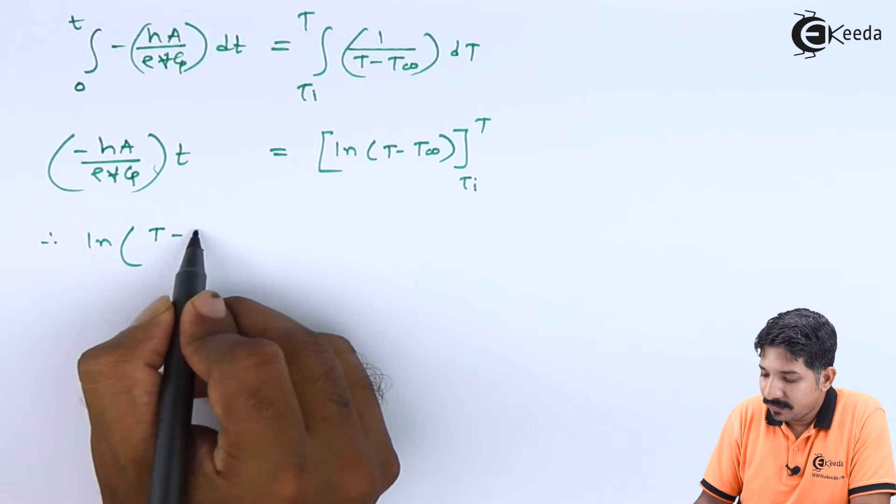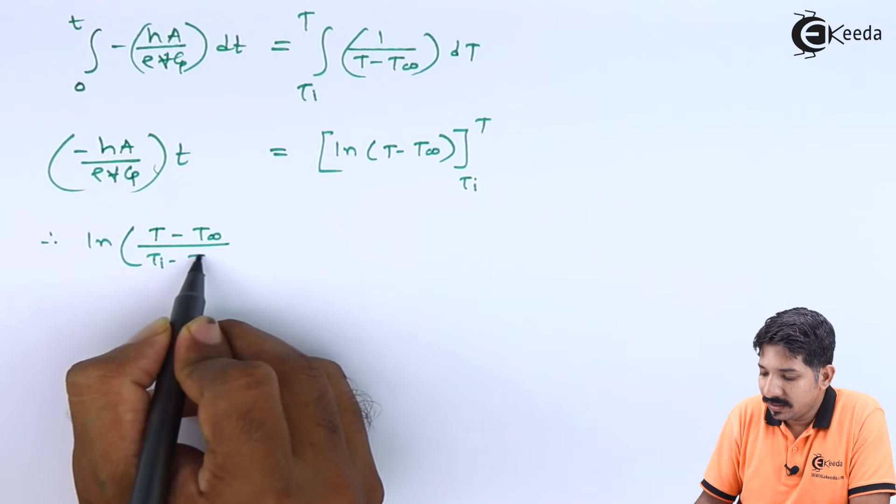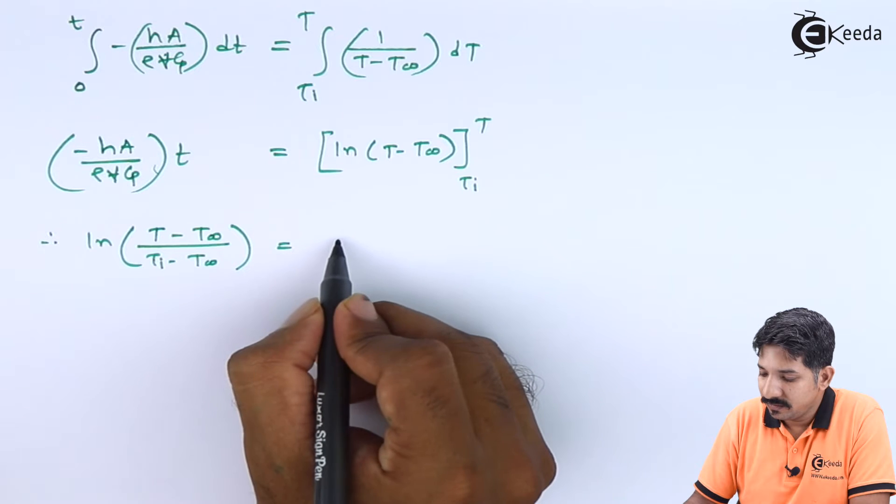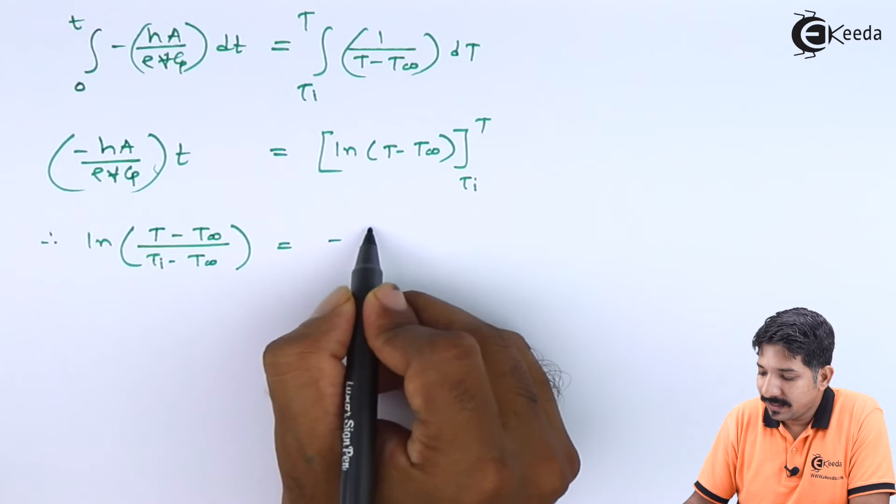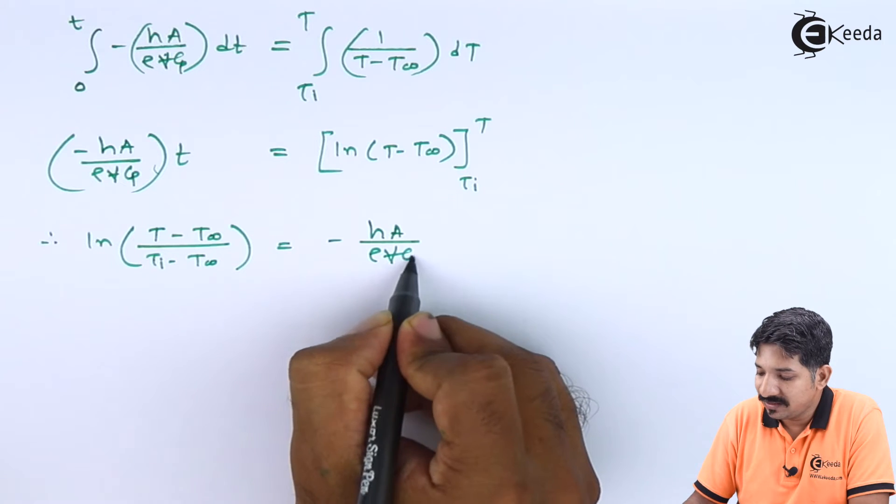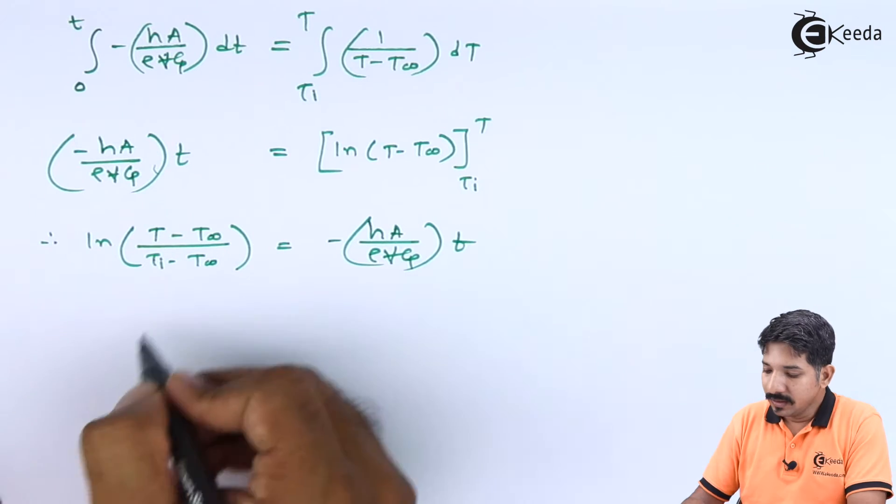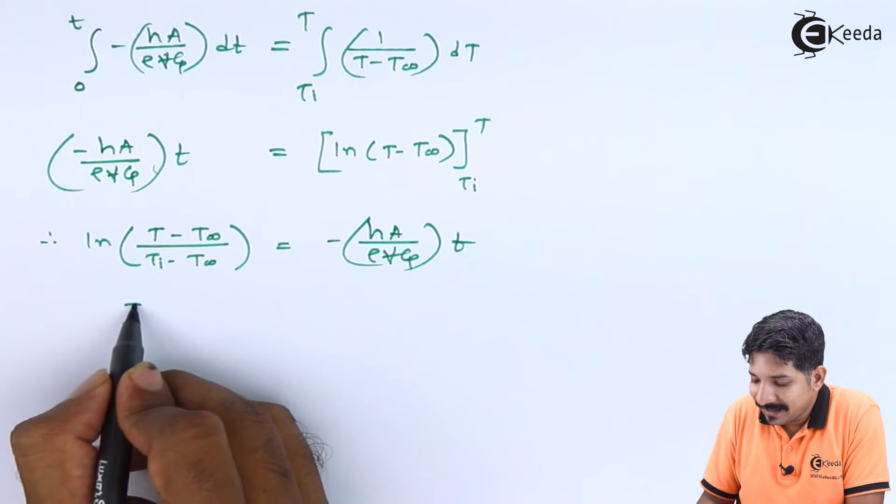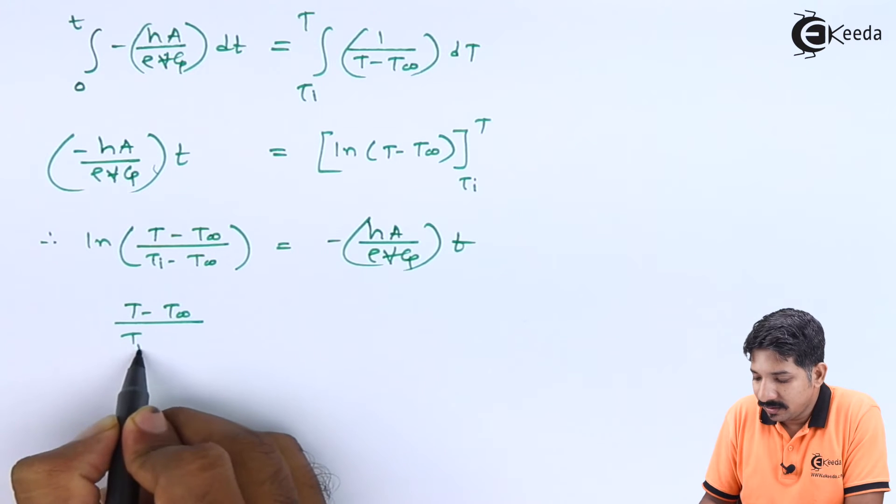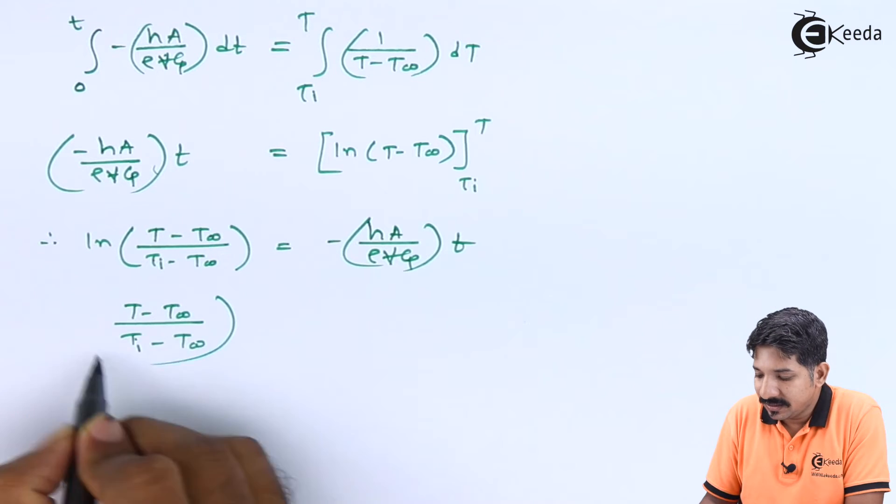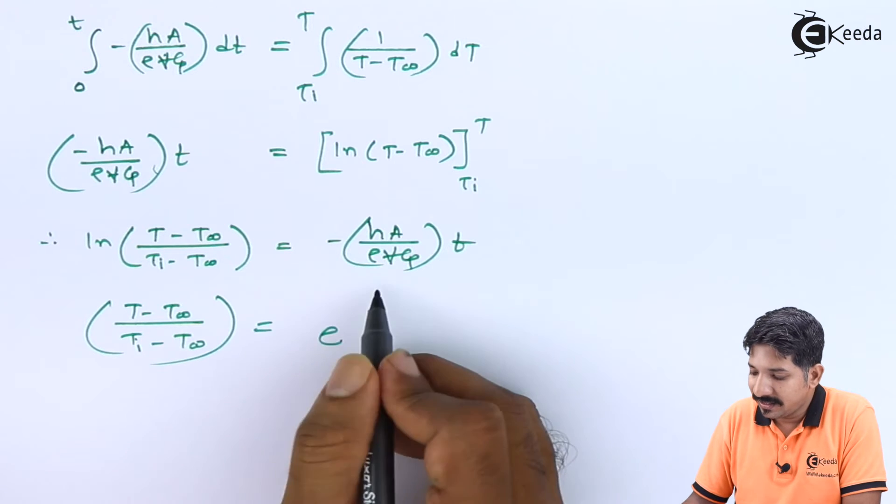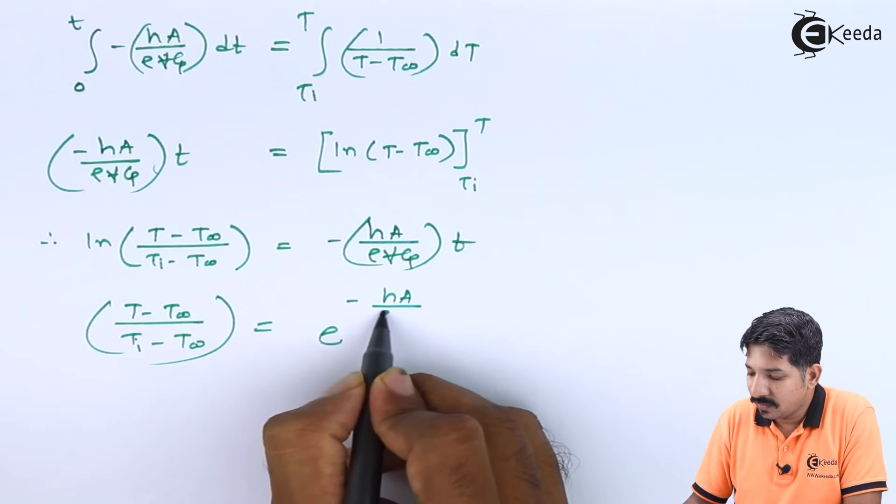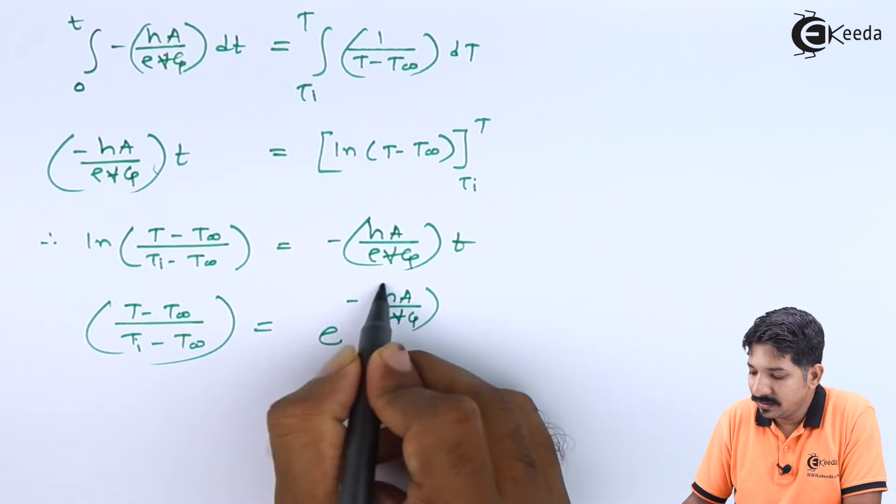Now if I want to eliminate this logarithmic term, I can write this as T minus T infinity upon Ti minus T infinity as e raised to this entire term, that is minus HA upon rho V CP into t.